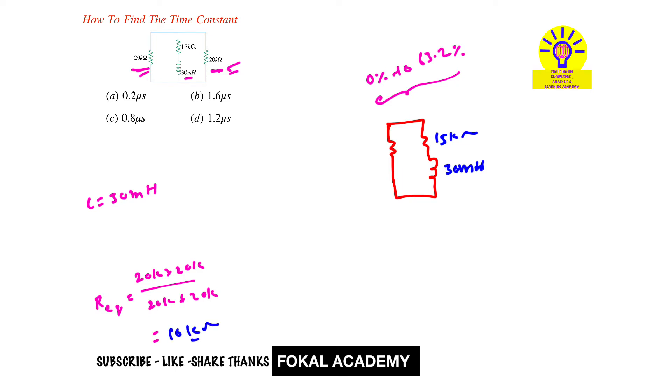10k. So here 10k. Now again these two resistances are in series. It can be reconstructed the circuit. So 15k plus 10k means 25k and here 30 mH.